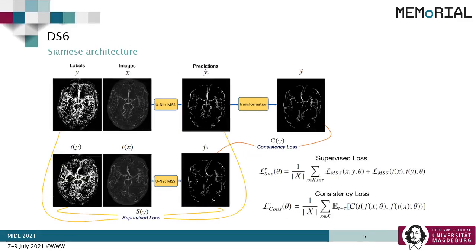To make the model deformation-aware, a Siamese architecture is used. There are two different types of loss used in the DS6 approach. First, a supervised loss is calculated by supplying the original input volume to the model and comparing the output against its corresponding label. A second supervised loss is calculated by supplying a deformed volume to the model and comparing the output against a deformed version of the corresponding label. Finally, a consistency loss is calculated by applying the same deformation on the first output and comparing that deformed output against the second output. A sum of all three losses is used for backpropagation.